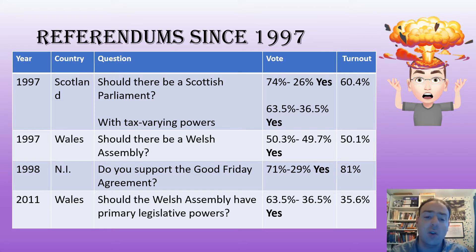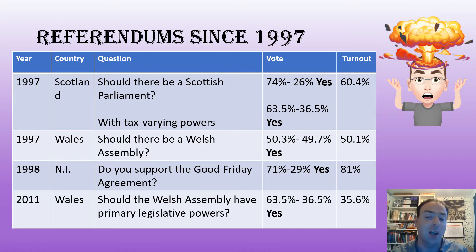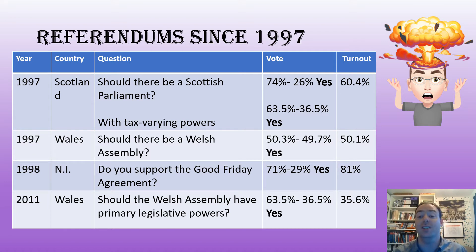A year later in 1998 we had in Northern Ireland the referendum on support for the Good Friday Agreement. Turnout was excellent at 81% and the answer was overwhelmingly yes — 71% to 29%.